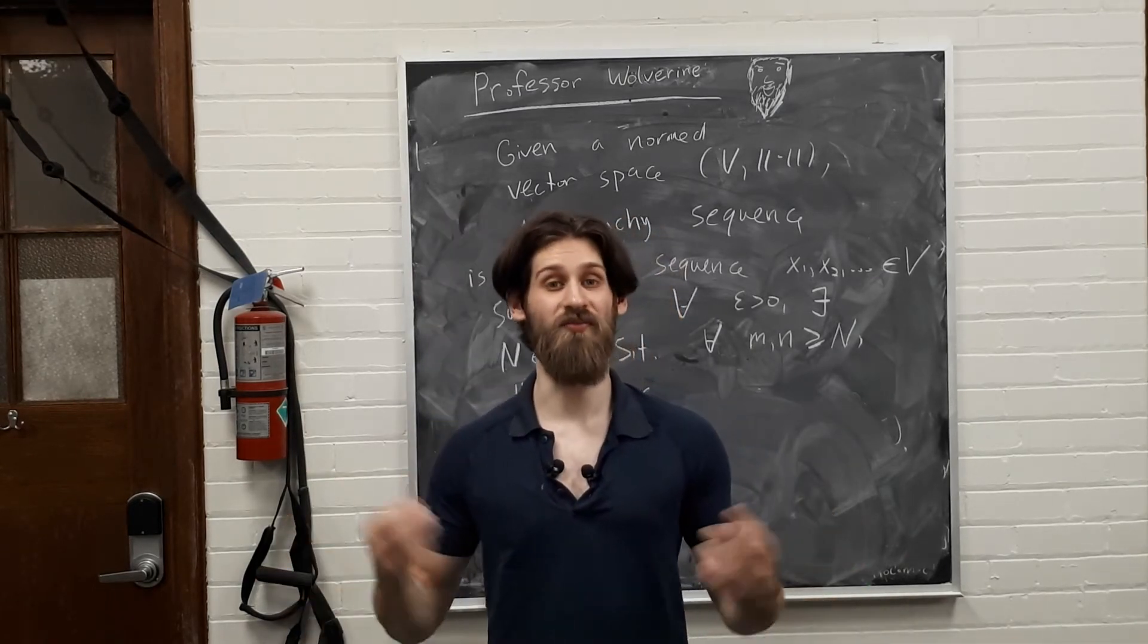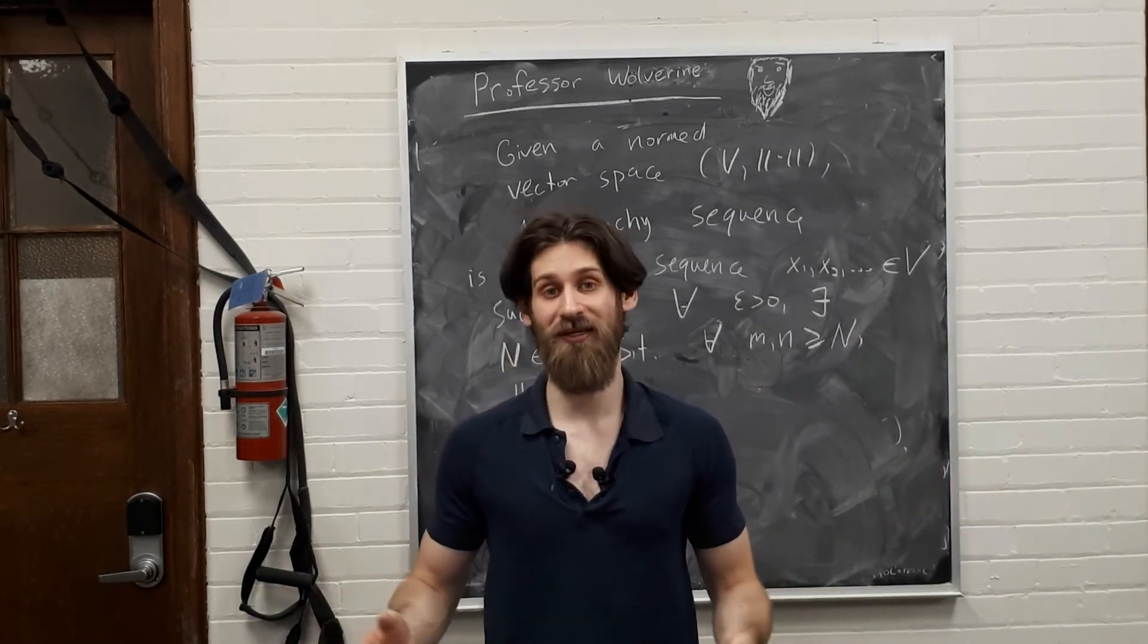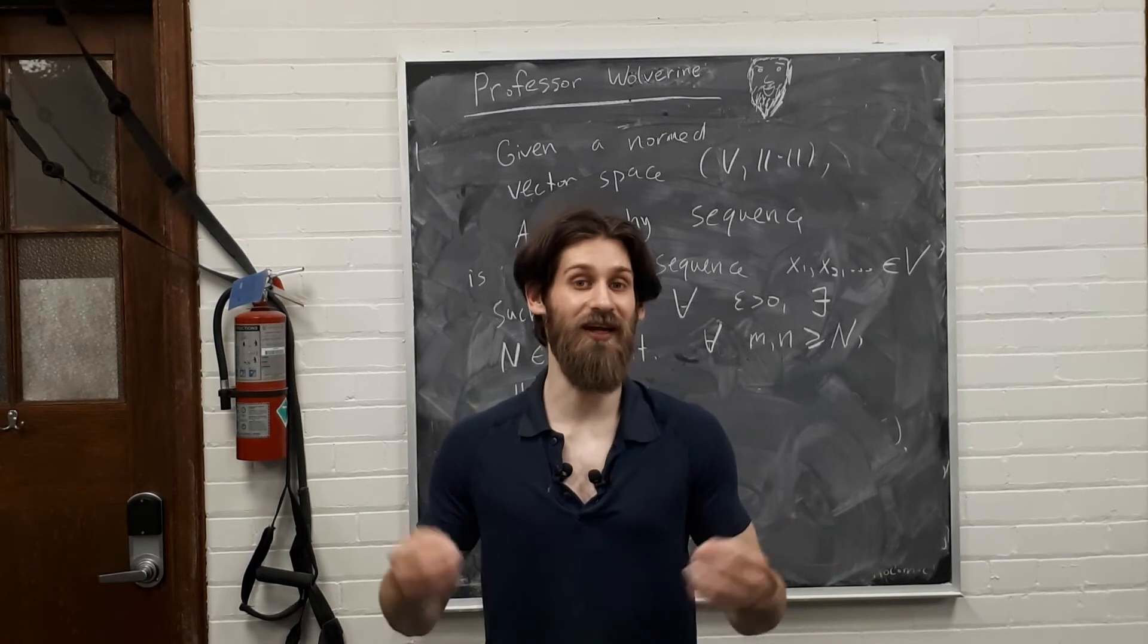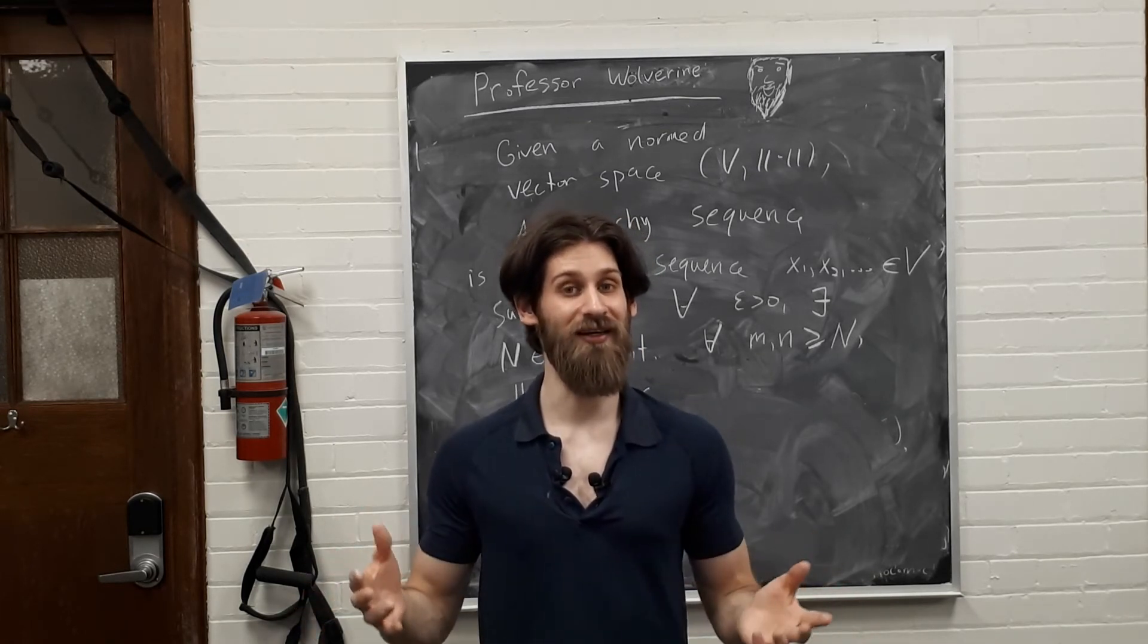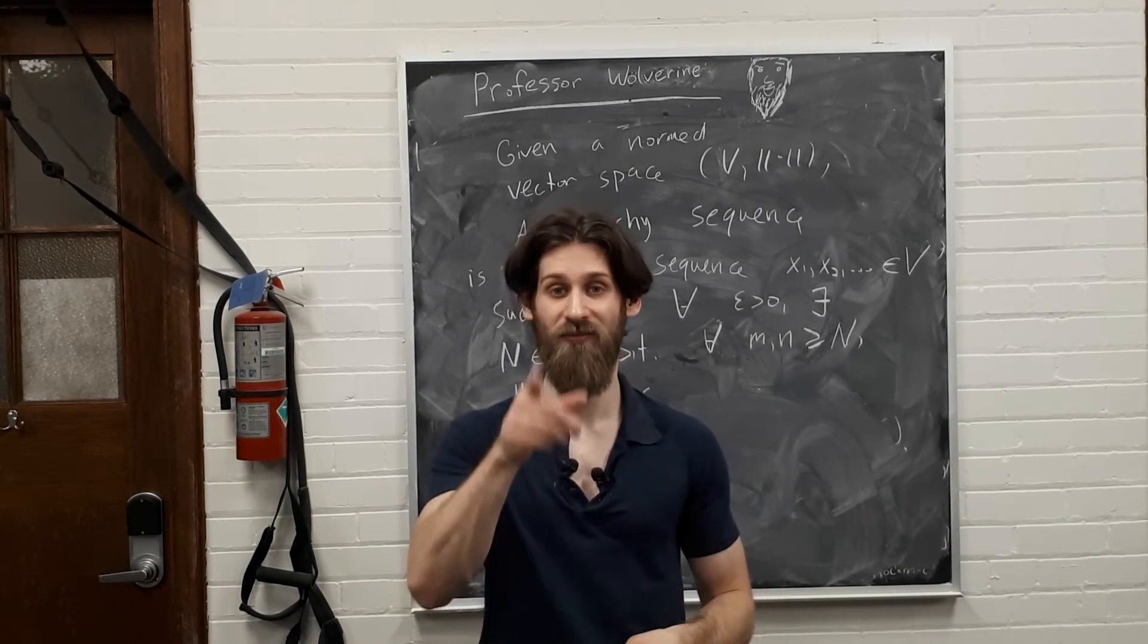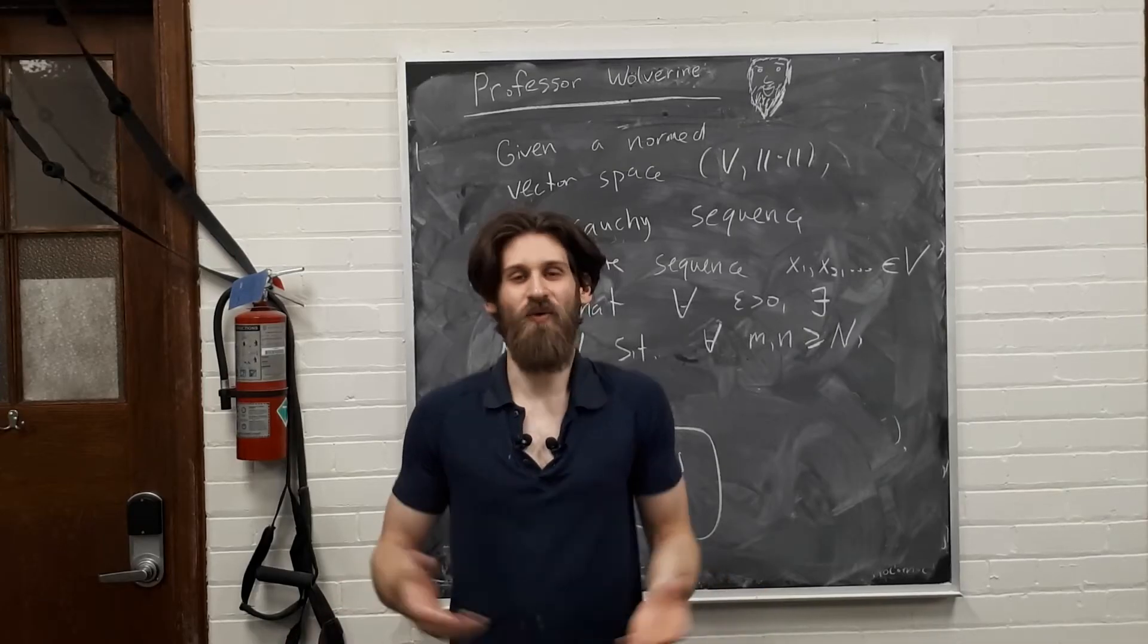So there's also something called an inner product space, which you have seen probably in linear algebra. And to every inner product space, you can associate a norm. So in particular, every inner product space is also a norm space. If the norm induced by the inner product is complete, it's what's called a Hilbert space. I am Hilbert, and this is my space.